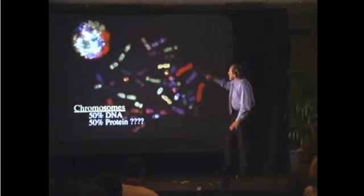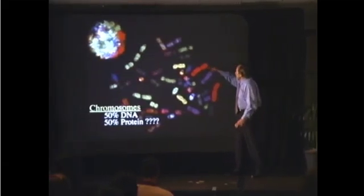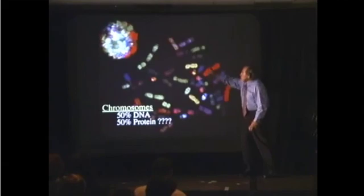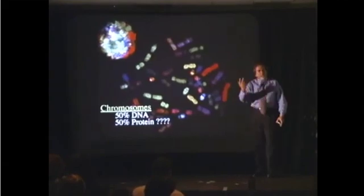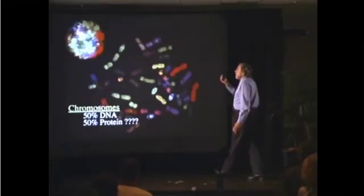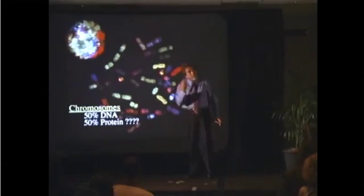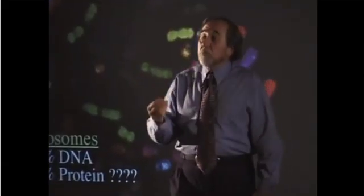I can see that one of these is from the mother and one is from the father because you can color code them. That's an interesting experiment, but the question is: what am I staining? I'm not staining DNA. So what's in the nucleus? The answer is: 50% of the nucleus is DNA and 50% is protein.